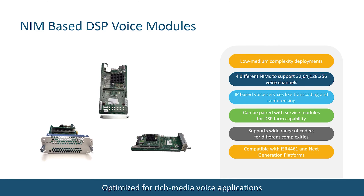Voice UC integration is definitely a big differentiator for Cisco SD-WAN, offering what makes Catalyst 8K unique in the SD-WAN branch. Next-gen DSP voice modules for DSP farms come in NIM form factor with 32, 64, 128, and 256 voice channels for transcoding, conferencing, and media terminations. These modules are supported on SD-WAN use cases as well. There is no PVDM DSP on the motherboard supported on C8300 and C8200 platforms — the only option is to have DSP functionality on these platforms with NG PVDM DSP modules.